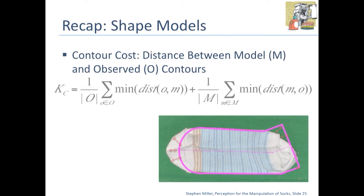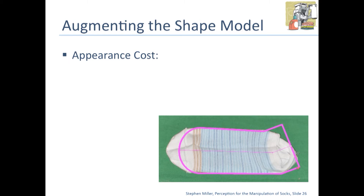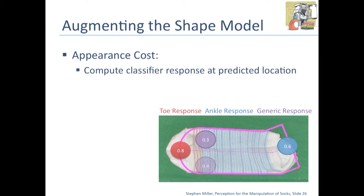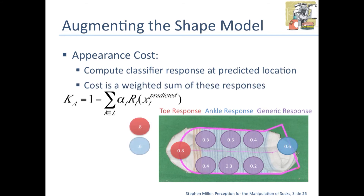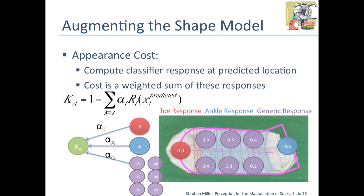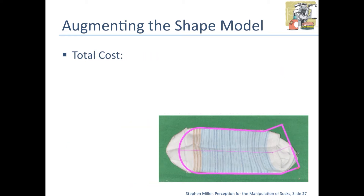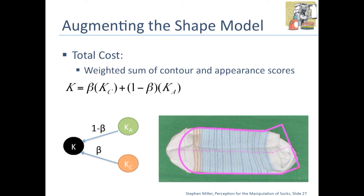In the original framework, the contour cost was just the distance between the model and the observed contours. Now we'd like to augment this cost with appearance information: the model will predict the location of a toe, ankle, heel, or various generic patches, and we take a weighted sum of the classifier responses at those predicted locations. This gives an appearance cost indicating how well the appearance matches what we actually see in the image. The total cost is then a weighted sum of contour and appearance scores.